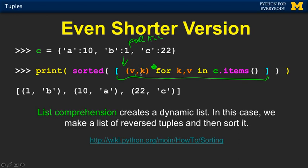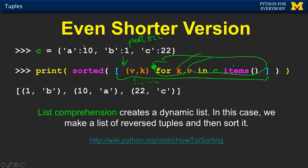It's going to stamp enough to go all the way through for each k, v that's in c.items(). So that's the key-value in this dictionary: a:10, b:1, c:22. This is going to run three times and make three tuples, but this list is going to have them flipped.